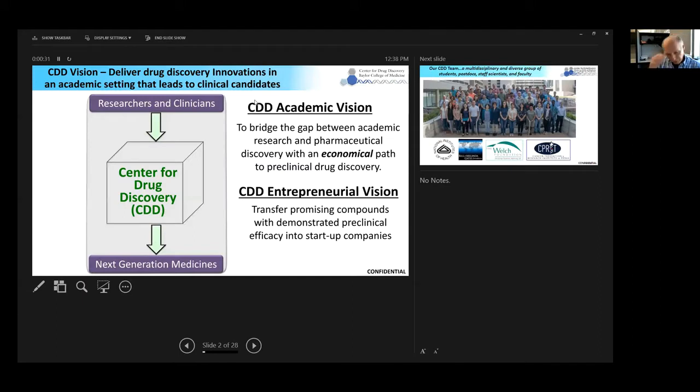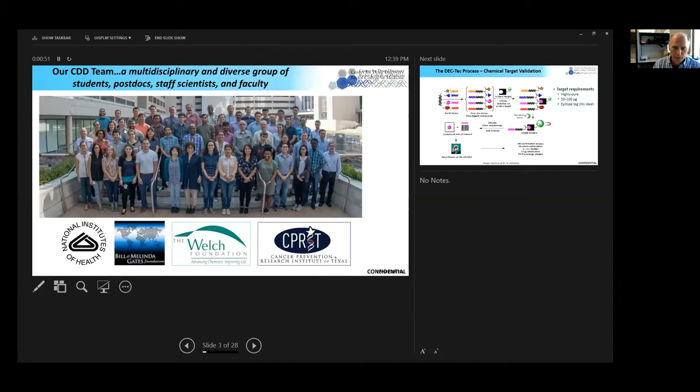The Center for Drug Discovery at the Baylor College of Medicine is an academic group. The primary vision is to bridge the gap between academic and pharmaceutical research with an economical path, and we want to move our discoveries into startup companies. We're a decent-sized academic group and we receive funding from the groups listed at the bottom of this slide.